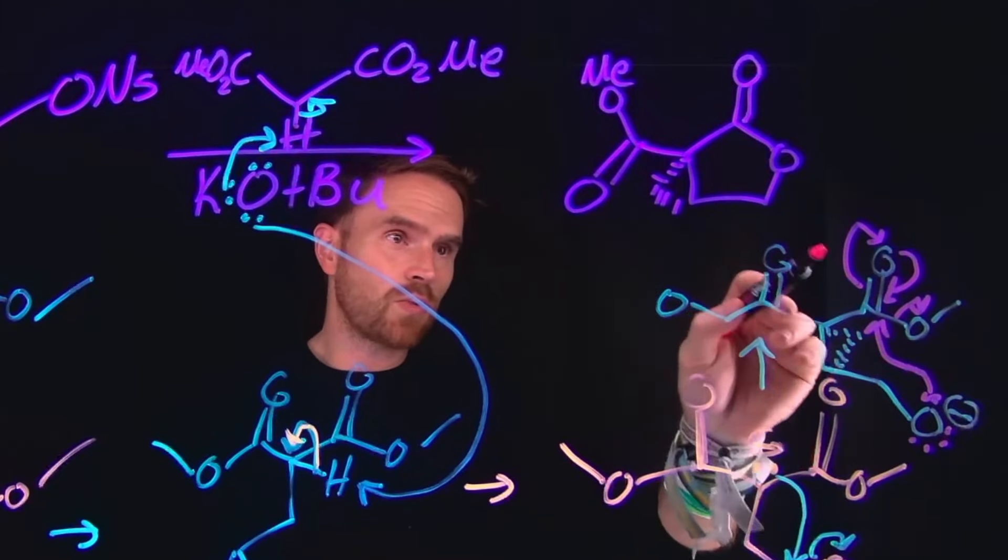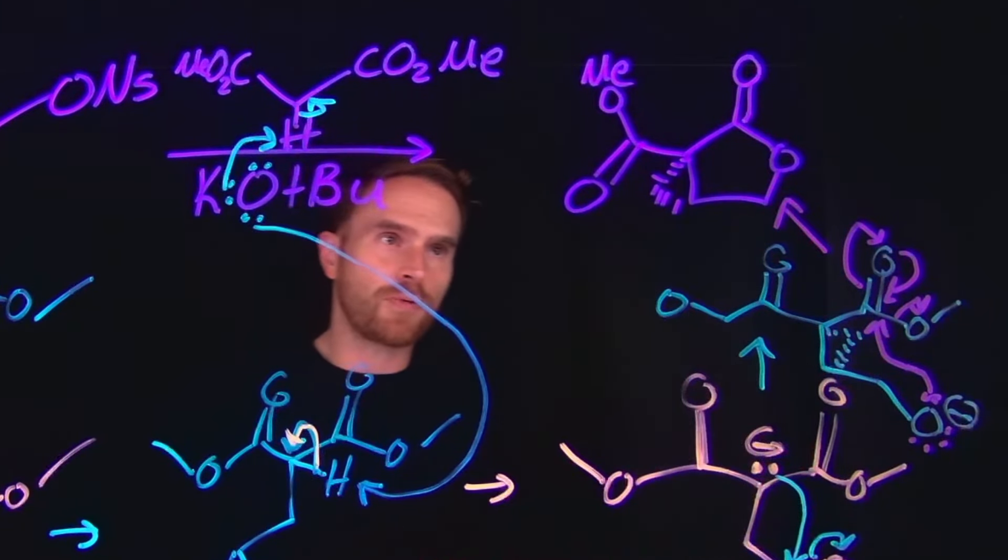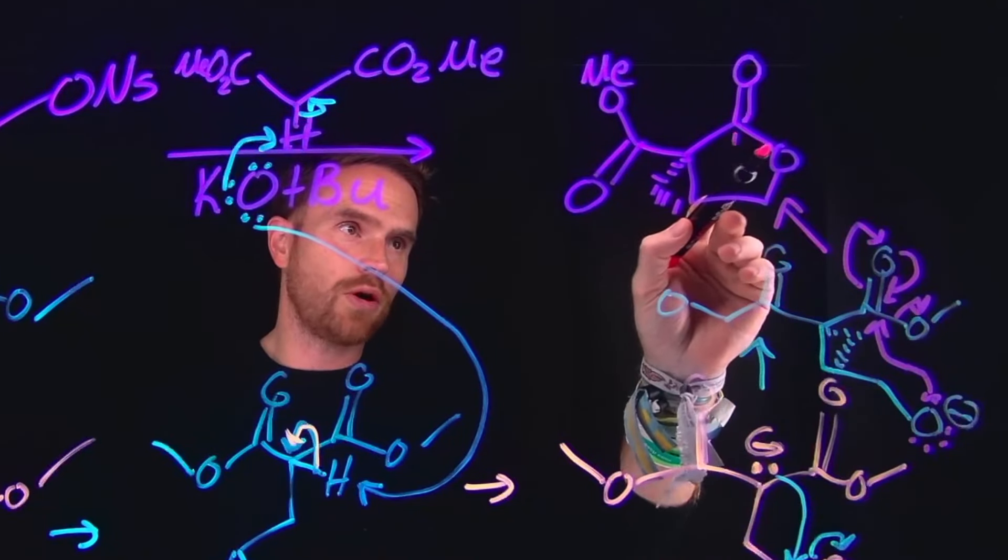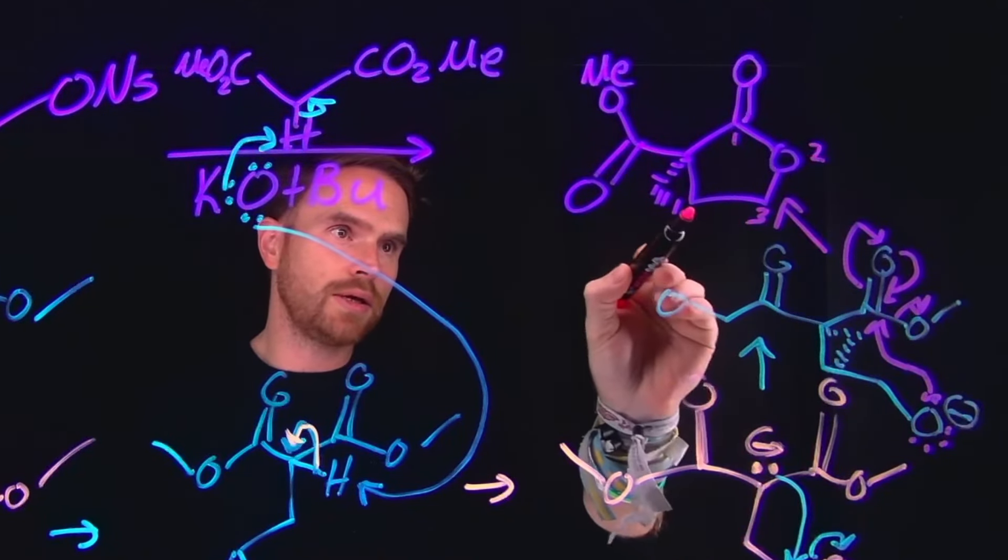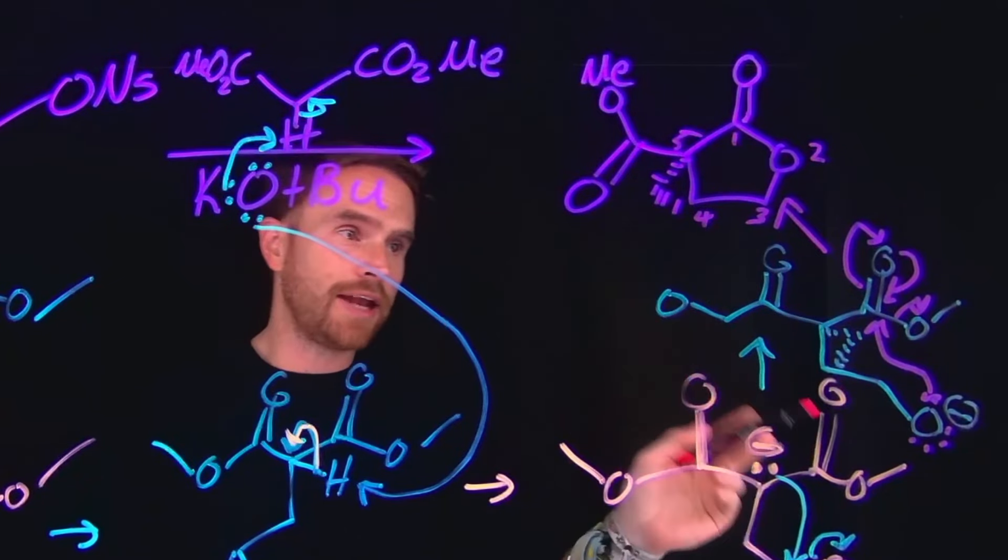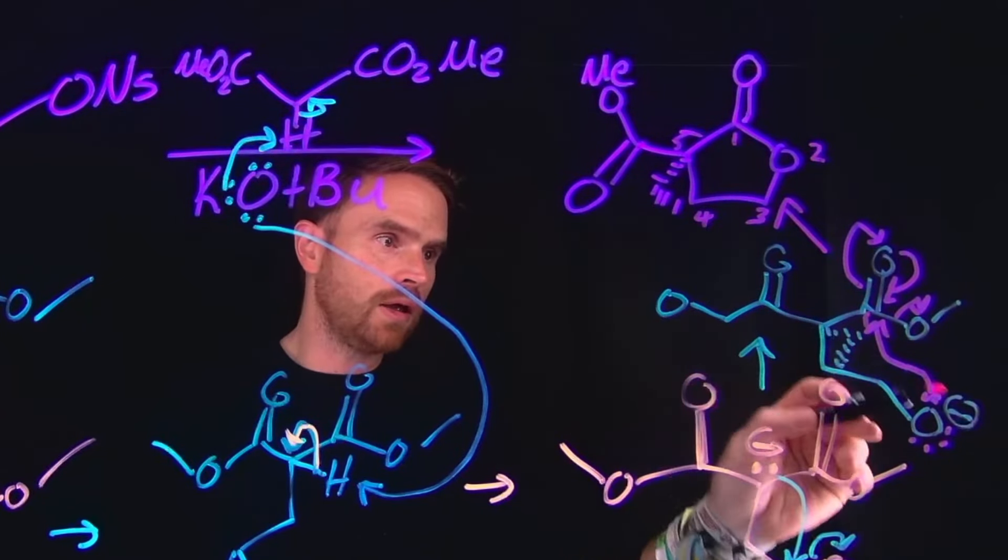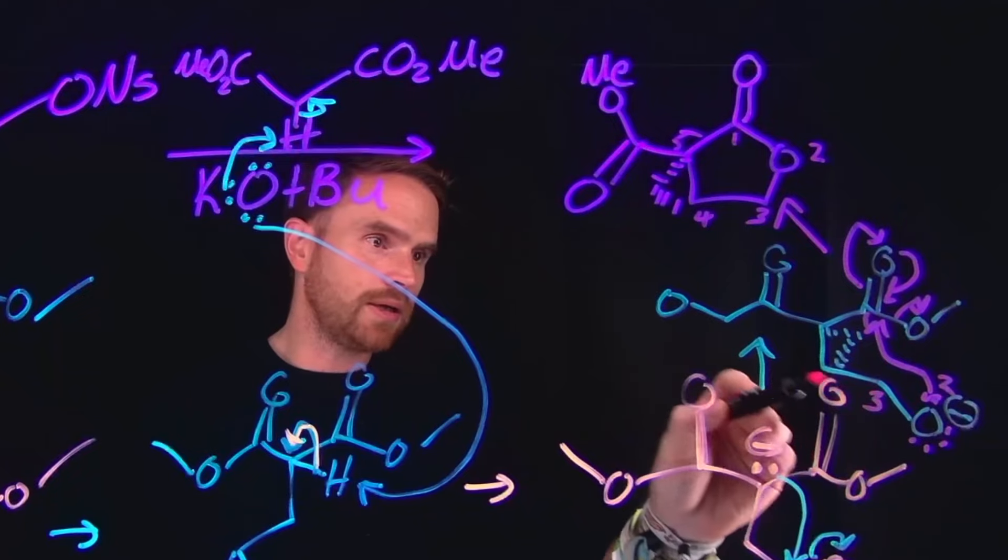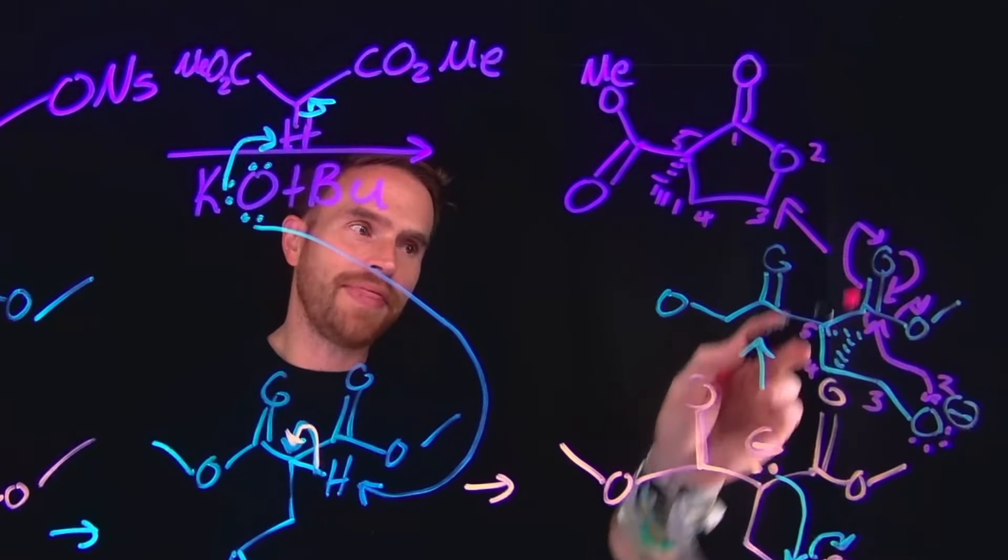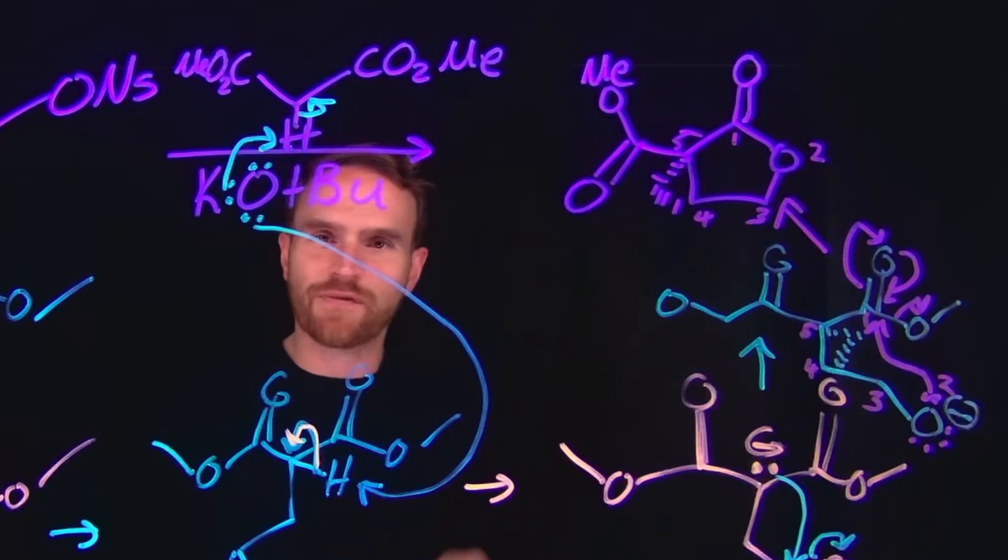That closes the ring, leaving us with this cyclopropyl group. Notice that at this position, if we call this position one, then two is here, three, four, and five. And importantly, we see that we have one, two, three, four, five. That is how we get, ultimately, this final product formation.